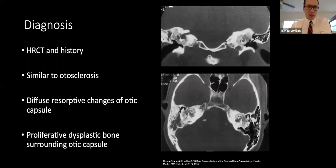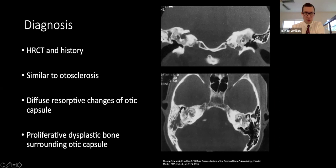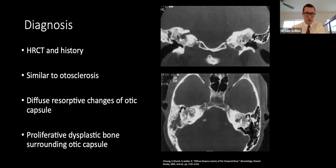Diagnosis is by high-resolution CT and history. This is similar to otosclerosis in that it can show fenestral or even retrofenestral hypodensity, but as the disease progresses it shows more diffuse resorptive changes around the otic capsule not seen in otosclerosis. The history is telling: patients may have fractures after minor trauma in childhood, a family history of osteogenesis imperfecta, or blue sclera. This differs from Paget's disease, which is often monostatic and asymmetric, in contrast to the bilateral involvement of osteogenesis imperfecta.